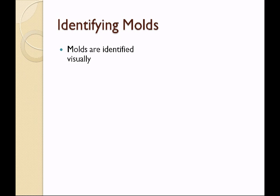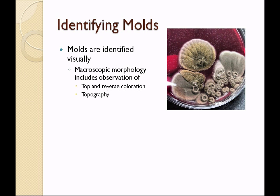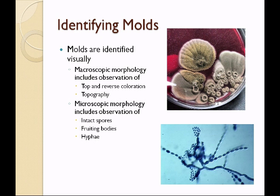Once we have them growing we have to identify them. Molds are almost always identified visually. This is very time consuming and we have to be sure that we are observing intact spores stuck onto the fruiting bodies and vegetative mycelium, so that we can see the septa or if they are aseptate. We begin by looking at the macroscopic morphology — the coloration on top, and if possible the reverse coloration, as they may be entirely different. We also look at the topography and culture characteristics. Then we make a microscopic mount to observe intact spores, fruiting bodies, and hyphae.